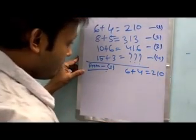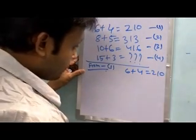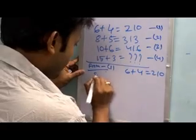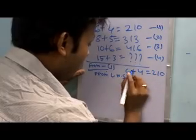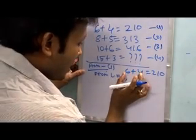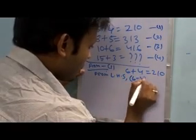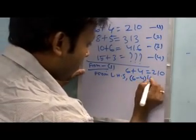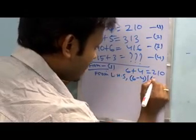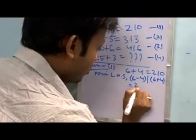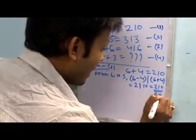Now from the left-hand side, if we subtract 4 from 6 followed by addition of the two digits, that is 6 plus 4, what we get: 2, 5, 10 equal to 210, that is equal to the right-hand side. Similarly...